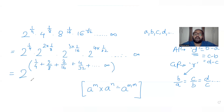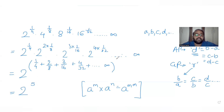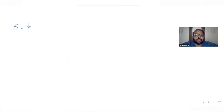I now have the common base 2 with the expansion of the powers in the exponent. Let me call this exponent series S. So S equals 1/4 plus 2/8 plus 3/16 plus 4/32, continuing to infinity. Once I find the value of S, I can substitute it back to get the final answer.